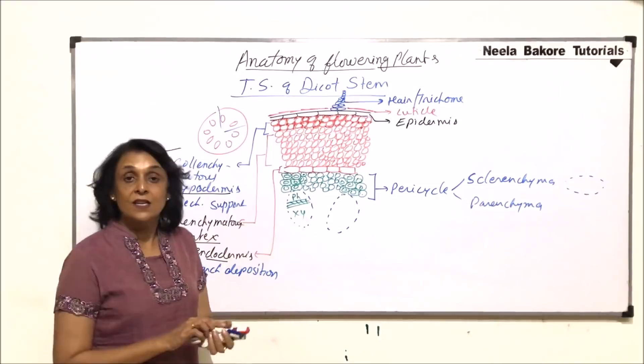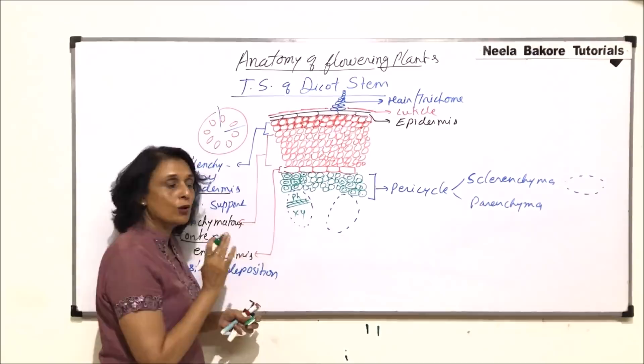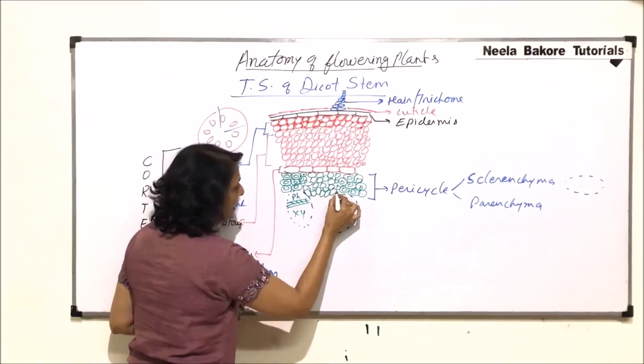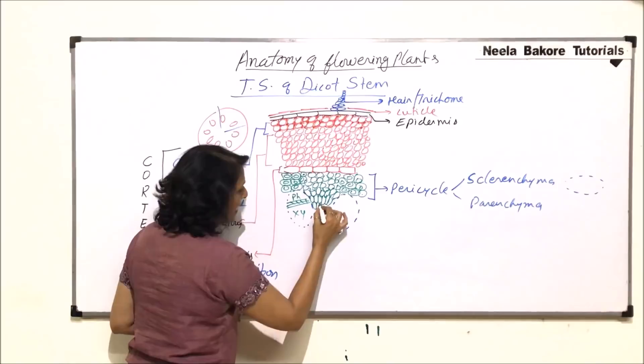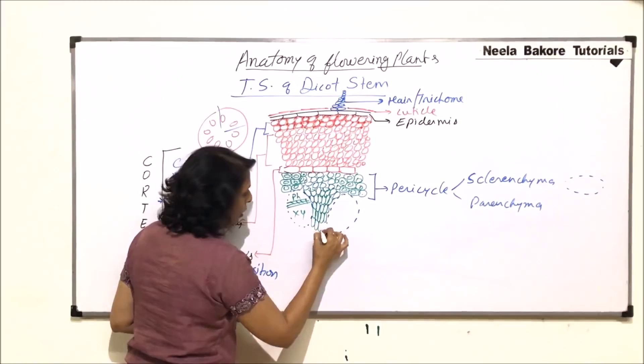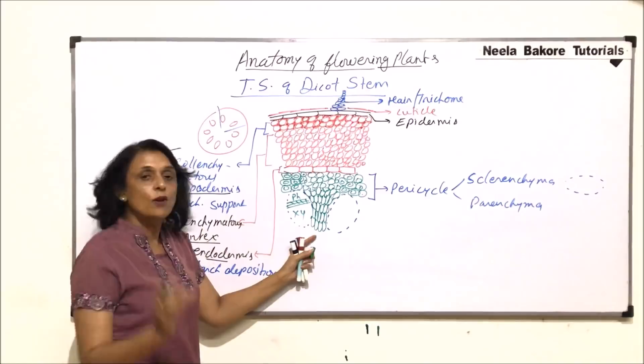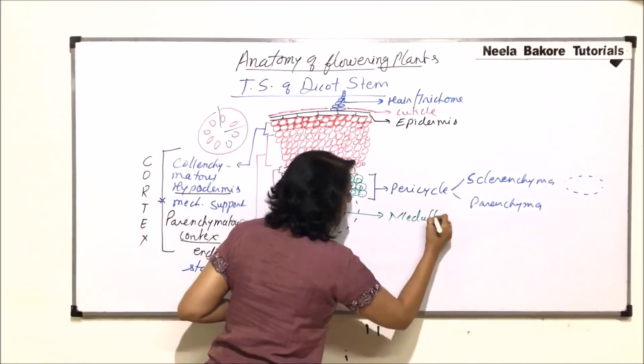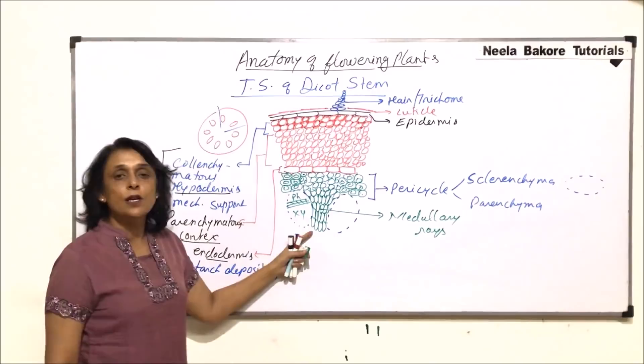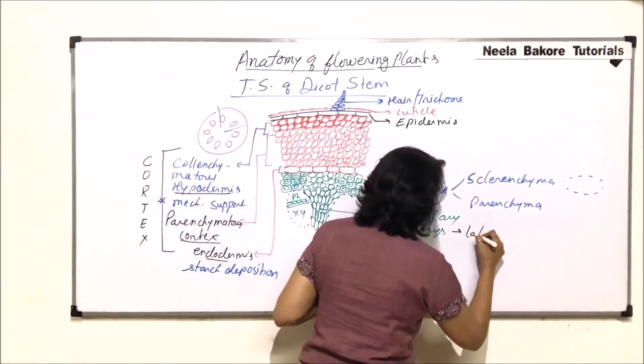Parenchyma cells are also present in between the vascular bundles, where they get squeezed and become a little elongated. These elongated parenchyma cells between vascular bundles are known as medullary rays or medullary rays. Their function is lateral conduction — they help in lateral conduction.